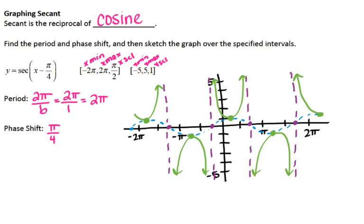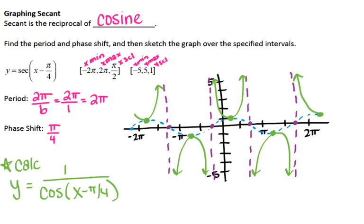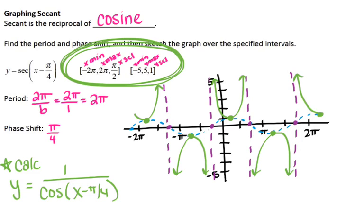Graphing secant by hand is a pretty complicated process, so you can use the calculator to graph it. I'm going to graph y equals 1 over cosine of (x minus π/4). When putting this into the calculator, you'll need to adjust the windows using the scaling I gave you. The calculator should give you a graph that looks like what we have in green. Don't forget to check that you're in radian mode. Once you graph it in the calculator, you can copy the graph onto your paper.